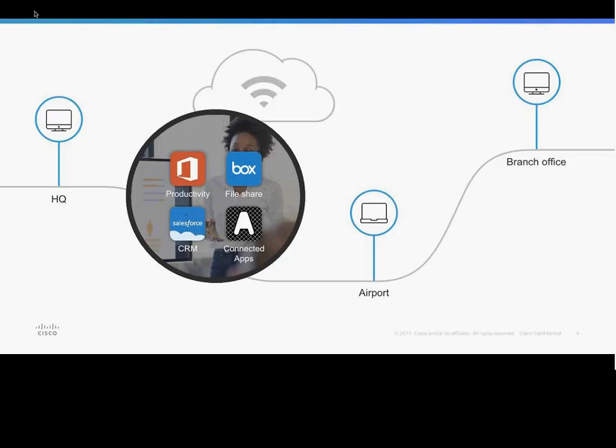This is Michelle, a sales rep at an organization like yours. She's at headquarters with a meeting at a branch office. She starts working on her PowerPoint presentation and needs to get to the airport, so she uploads it to her collaboration folder - in this case Box, but it could be Google, Dropbox, or Office 365. At the airport she continues working on her presentation, then accesses her Cloud CRM tool, Salesforce. She then flies to the branch office, completes her presentation, and is all set for her customer meetings. This is very much the any way, any access, any time existence we're living in right now.